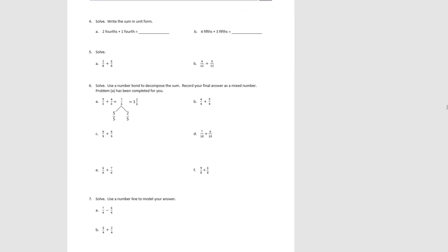Moving on, we're going to do the same type of problems but with addition instead of subtraction. Pause the video and try A and B for number 4. For A, 2 fourths plus 1 fourth would be 3 fourths in unit form. For B, we had 4 fifths, we added 3 fifths, so now we have 7 fifths. For number 5, written as number sentences: 2 eighths plus 5 eighths is 7 eighths. And here for twelfths: 4 twelfths plus 5 twelfths is 9 twelfths.